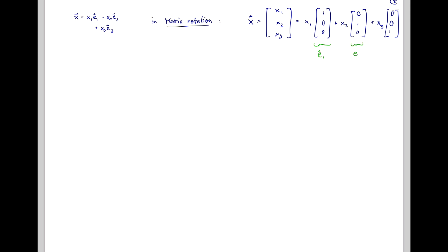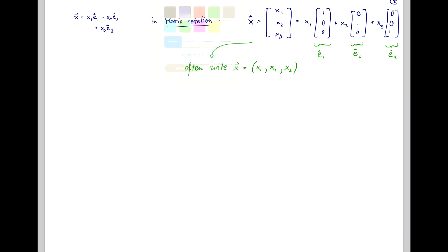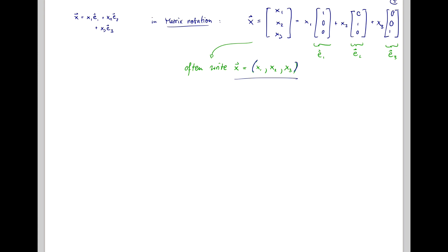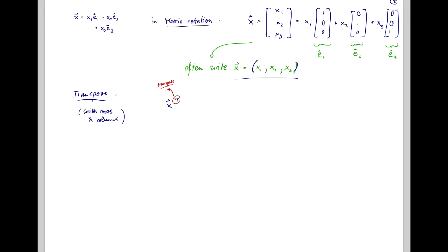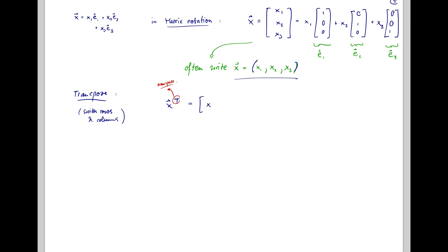And this is e3. If we write this in text where we don't want to take up three rows, this can often be written with parentheses as (x1, x2, x3). Note that this is not the same as the transpose of a vector. For vectors we also have a transpose, which means you switch the rows and columns. So x transpose — superscript T means transpose — is a row vector given as [x1, x2, x3], which is distinct from your column vector.